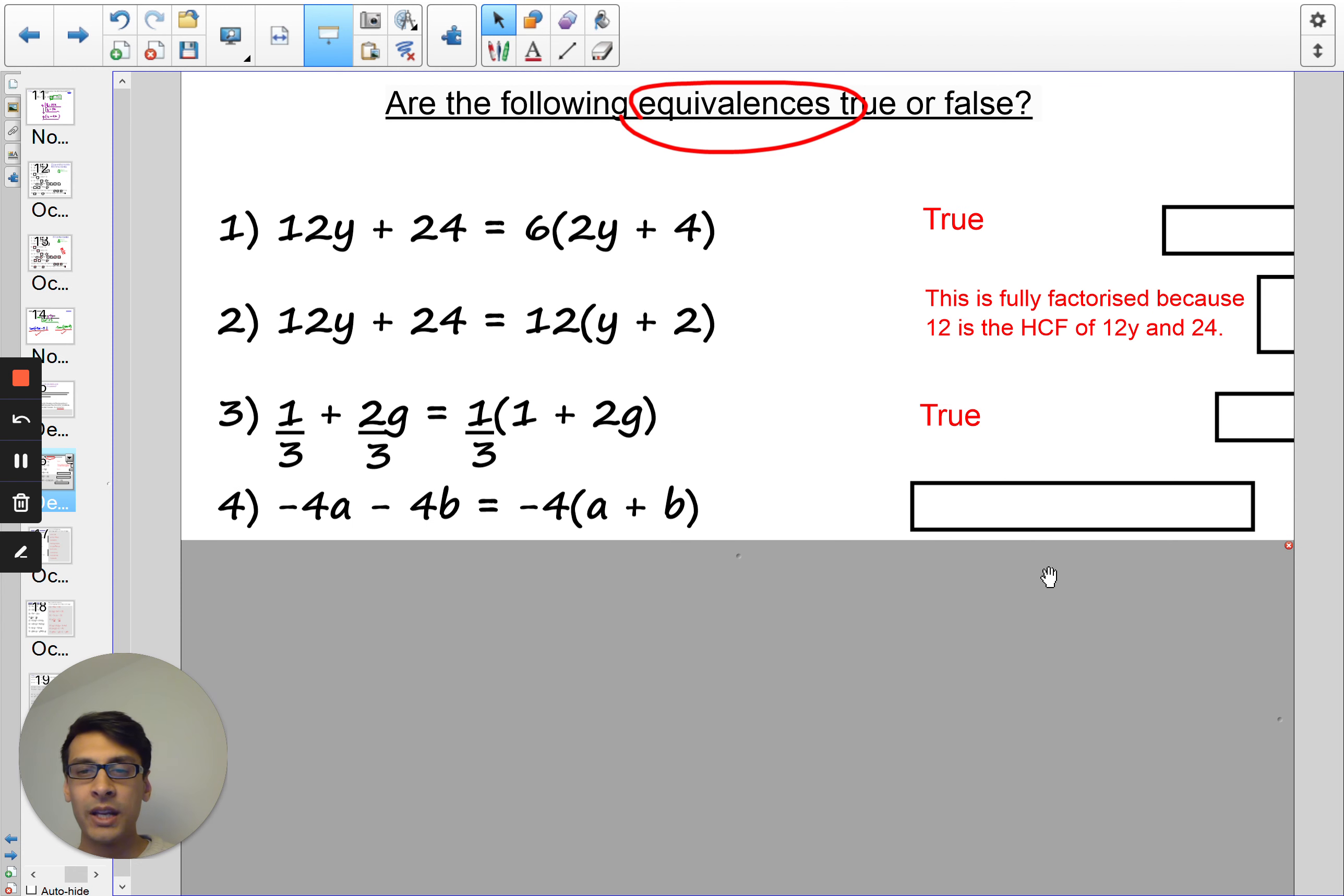Negative 4a minus 4b. Is this equivalent to the thing on the right? Well, it is true. We are going to get the same thing.